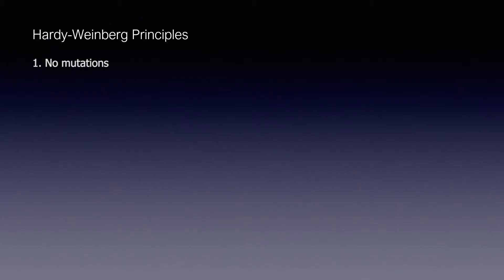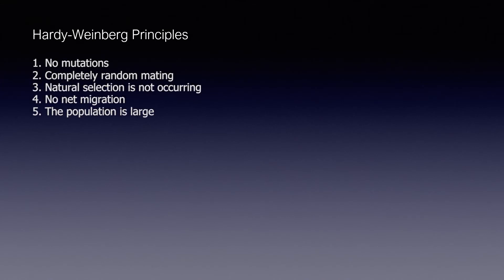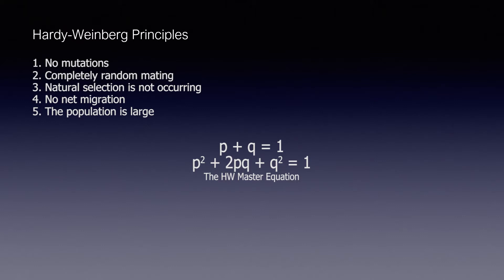Hardy-Weinberg genetics typically involve conceptually knowing how allele frequencies can change and vary over time. There are a specific set of conditions required which tells us when a population is in Hardy-Weinberg equilibrium. We can use the equation to calculate the allele frequencies in a population that is in Hardy-Weinberg equilibrium.